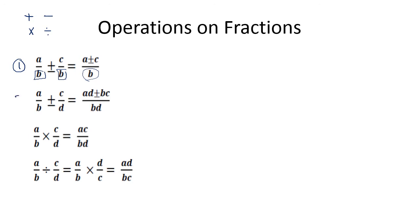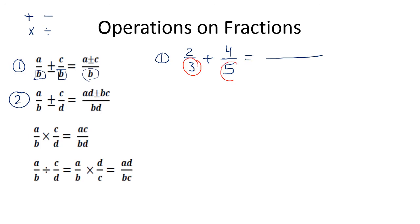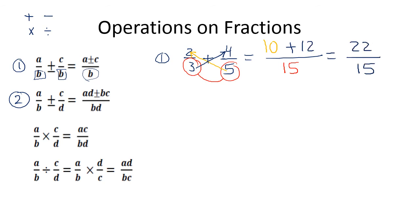The second case: adding or subtracting two fractions which do not have the same denominator. For example, two over three plus four over five. We first multiply three by five to get 15, then five multiplied by two equals ten, and three multiplied by four equals 12, so it's 22 over 15.